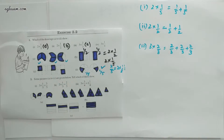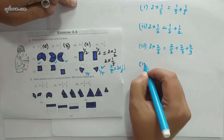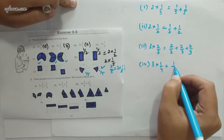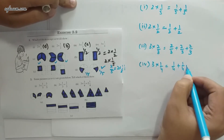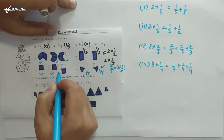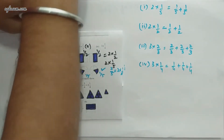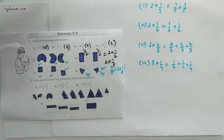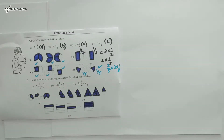Obviously the last one, we are only left with figure c. The answer is the c part. We can verify: 3×(1/4) = 1/4 + 1/4 + 1/4 + 1/4. Here we have 1/4, 1/4, 1/4, so the answer is c for 3×(1/4). This completes question number 1.